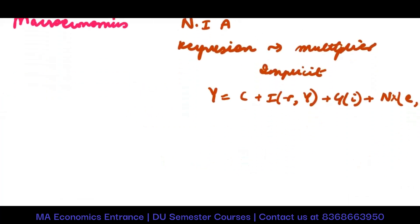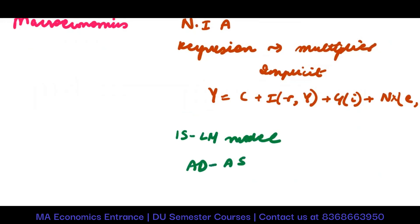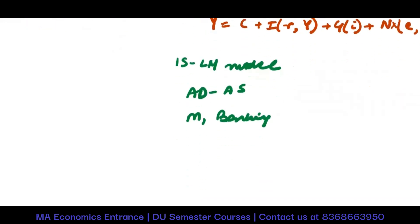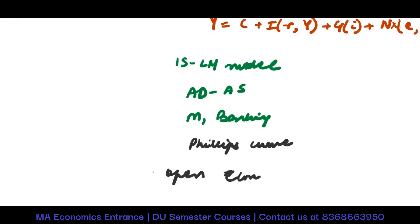They can make any implicit model and ask you to find the equilibrium. Then you should be doing the IS-LM model, the AD-AS model, money and banking, and you should be focusing on the Phillips curve.